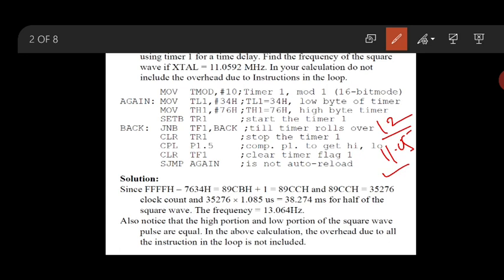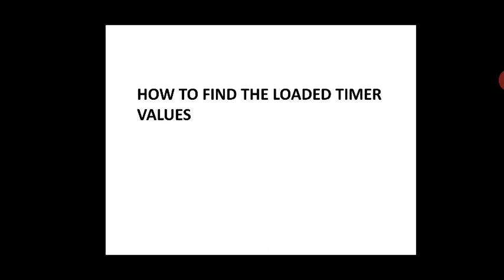The 38.274 milliseconds is for the half period of the square wave, as the loop repeats for both the positive (high) and negative (low) halves. For the full square wave, multiply by two. Inverting the period gives a frequency of approximately 13.064 Hz. Note that the high and low portions of the square wave pulses are equal. In further classes we will see how to change TL1 and TH1 to modify the timing.